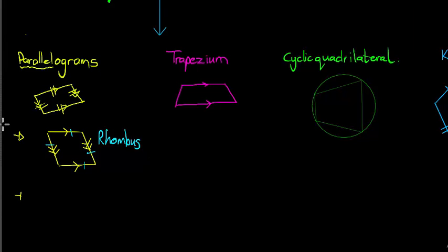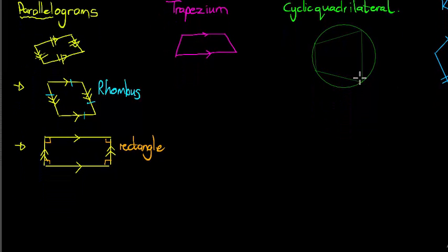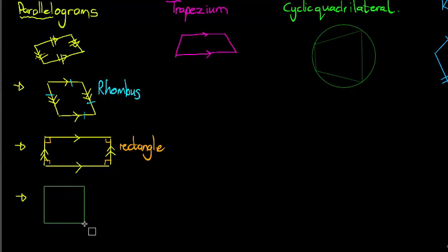When all four sides are equal, that is called a rhombus. Another special parallelogram is when the opposite sides are parallel but the angles between adjacent sides are 90 degrees — that's a rectangle. And then the last one is a special rectangle that is also a rhombus, which of course is a square. So a square is a special parallelogram, a special rectangle, and a special rhombus.